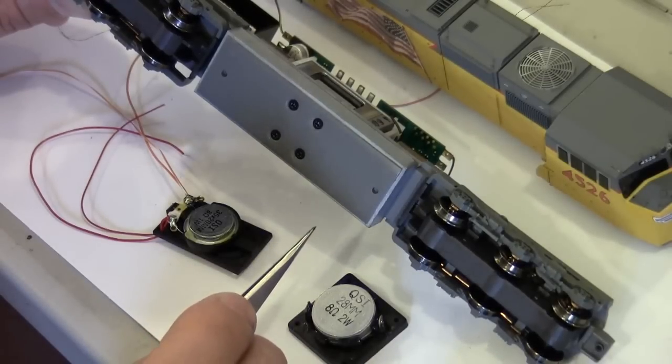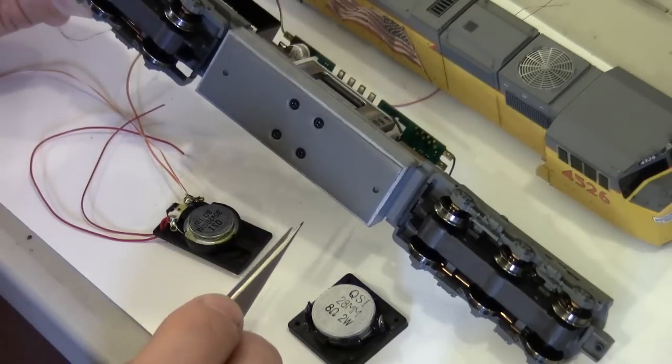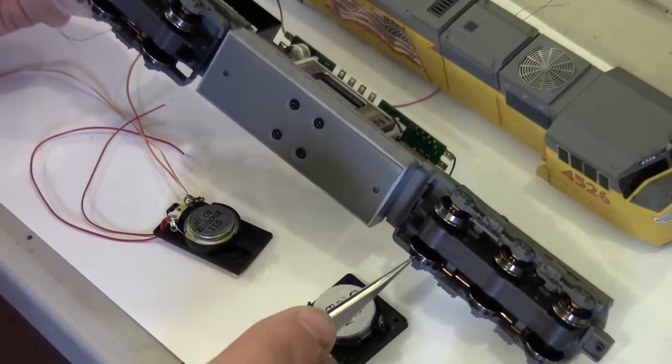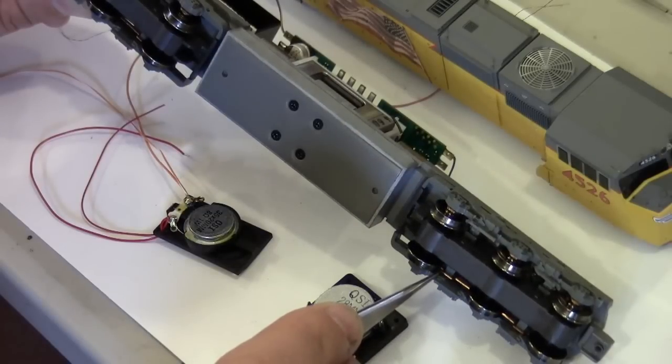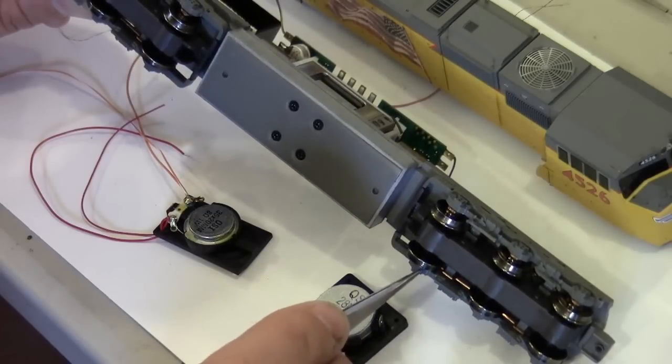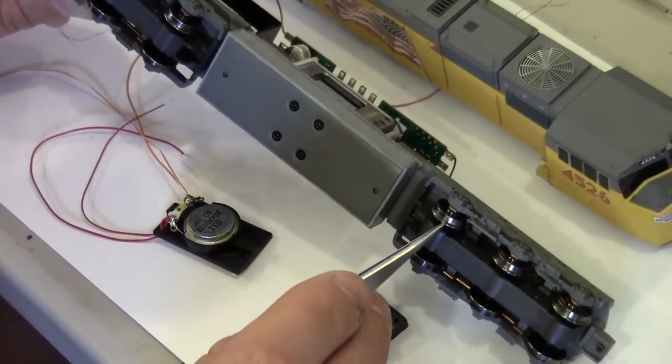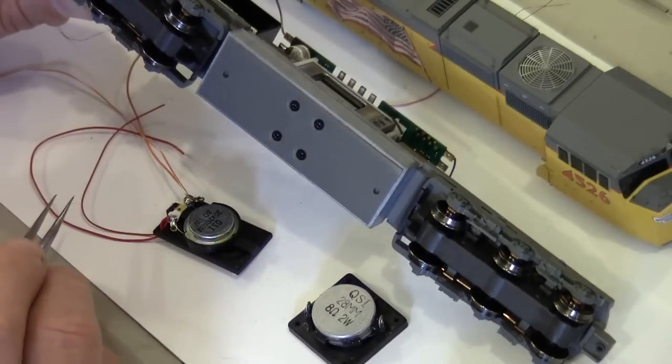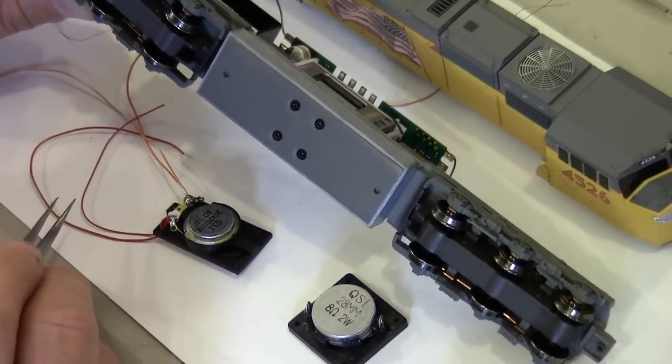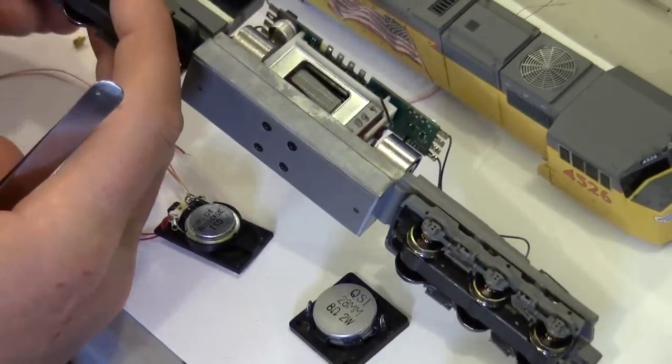If you take a look at some prototype pictures or video, you can see how sometimes uneven that track is. So by reaming out the axle centers on that pickup, it just allows a little bit more play or slop, and it allows the model to track better on the track.